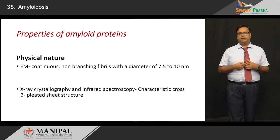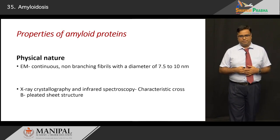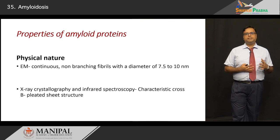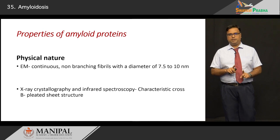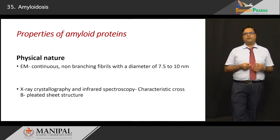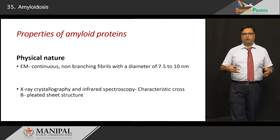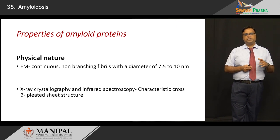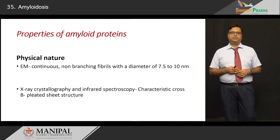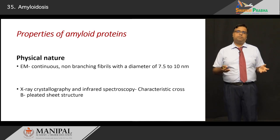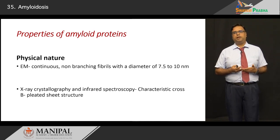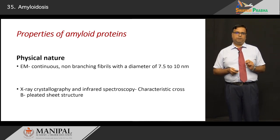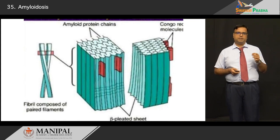Let us understand amyloid in terms of its properties. The physical nature of amyloid: if you do electron microscopy, you will see that they are continuous, non-branching fibrils with a diameter ranging between 7.5 to 10 nanometers. Imagine it like a stack of hay arranged continually and non-branching — that is analogous to the nature of amyloid as seen under electron microscopy. You may resort to higher-end techniques such as X-ray crystallography or infrared spectrophotometry for a detailed structural study. They have a characteristic cross-beta pleated sheet appearance, which is a very specific feature of amyloid.